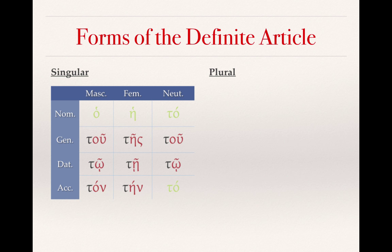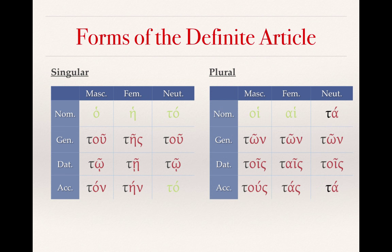The singular definite article forms are: nominative: ha, he, tau; genitive: tu, te, tu; dative: to, te, tau; accusative: ton, ten, tau.